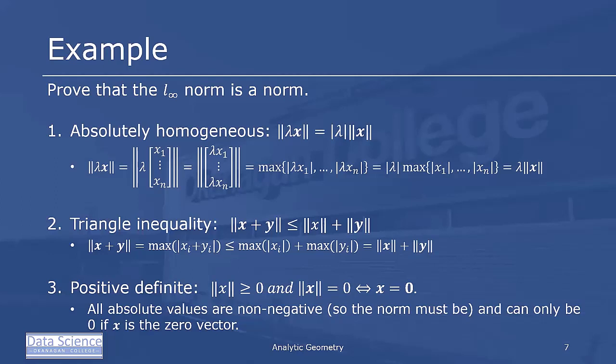One thing we want to do is prove that a distance metric is in fact a norm. There are entire branches of math devoted to norms and normed linear spaces, with hundreds of theorems and tools. To use these tools, all we have to do is prove that a function is in fact a norm, rather than proving individual properties each time. So in this example, we'd like to prove that the L-infinity norm is in fact a norm.